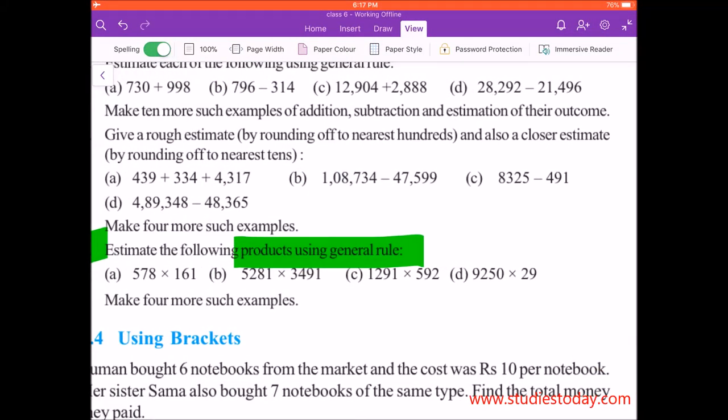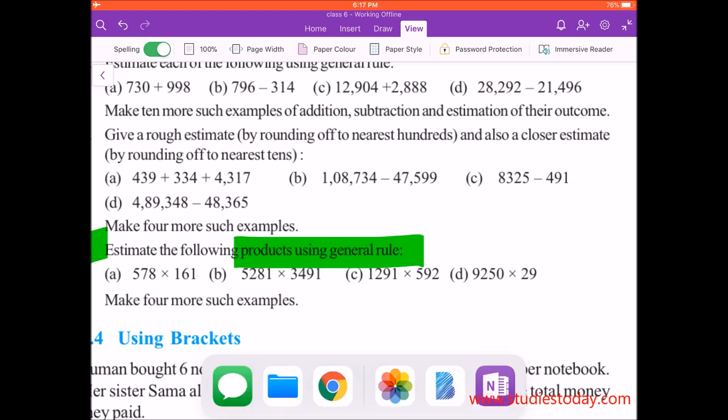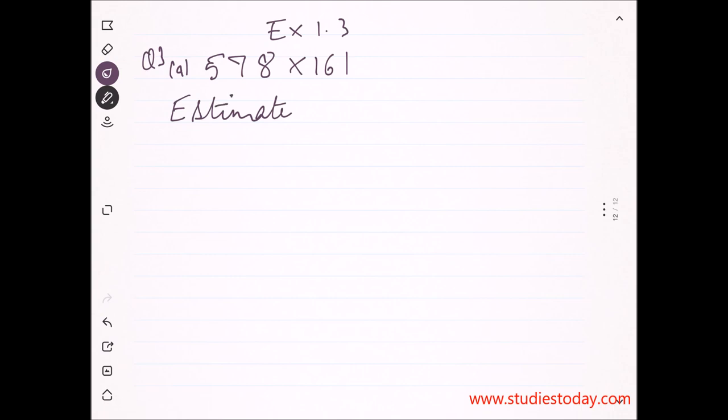Part A is 578 into 161. This is Exercise 1.3 Question Number 3, part A. Now, the question only reads 'estimate.' In NCERT it says estimate using general rule, but in your paper if it only reads 'estimate.'